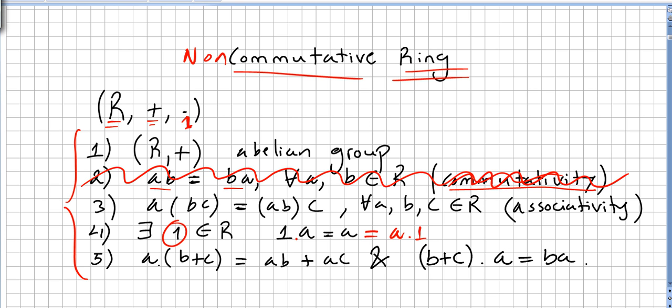And we also have to make b plus c times a is ba plus ca. So with this, with a couple of changes, you go from a commutative ring to a non-commutative ring.